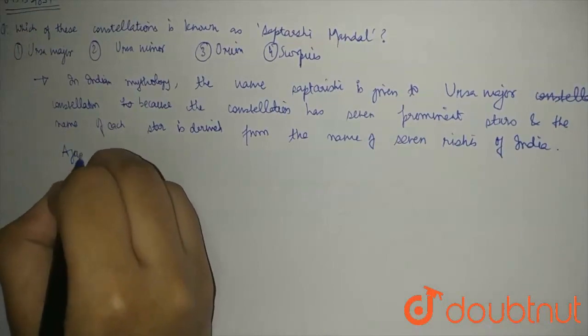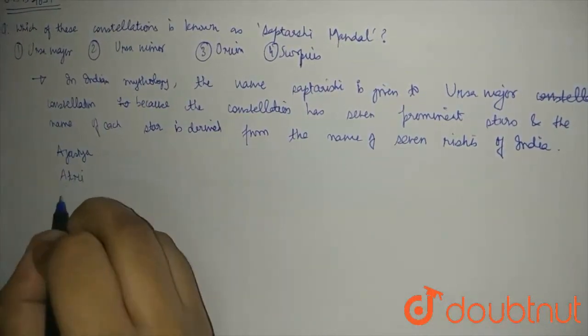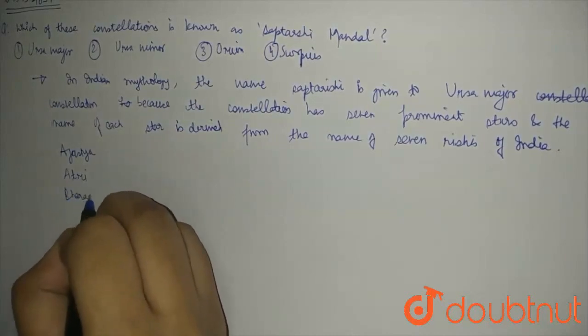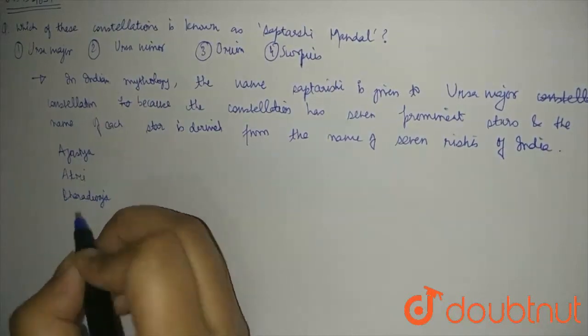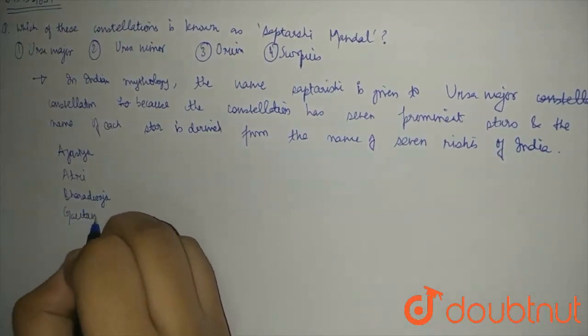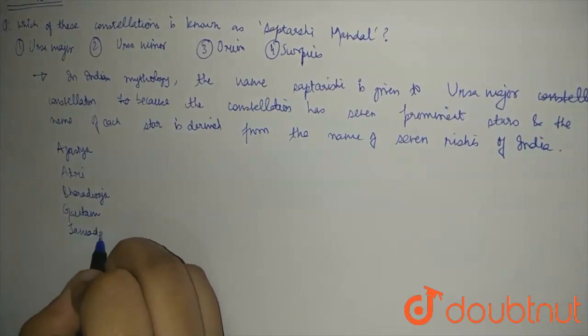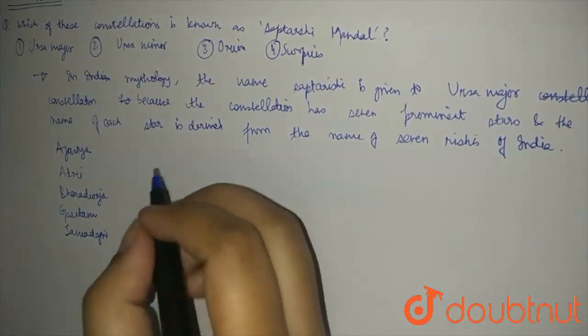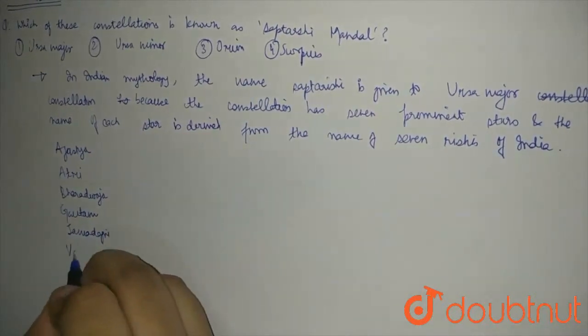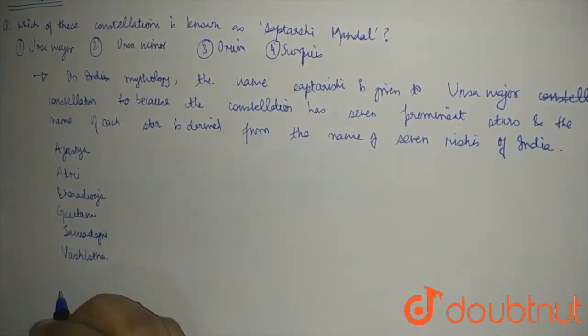So, it's Agastya, Atri, Bharadwaja, Gautam, Jamadagni, Vashishta, and Vishwamitra.